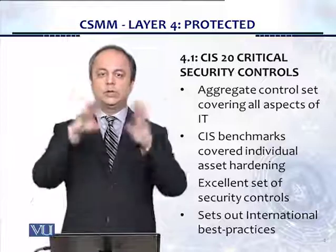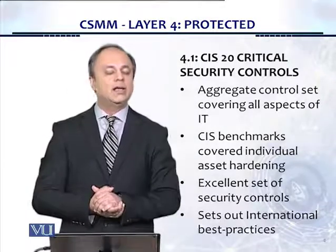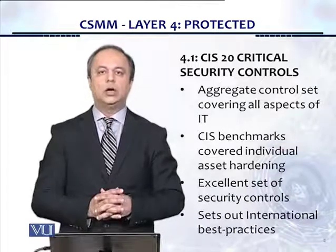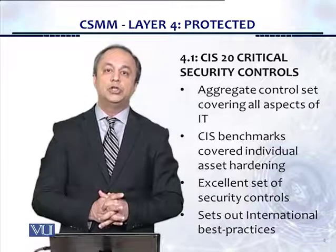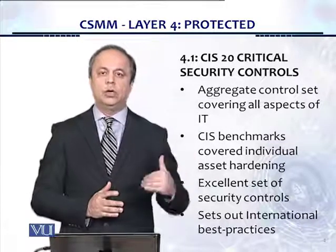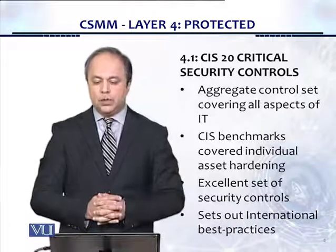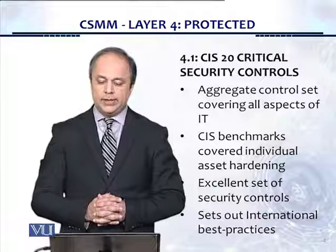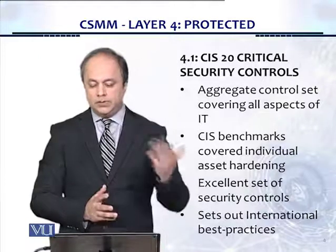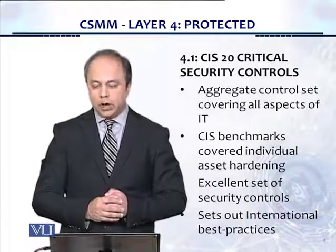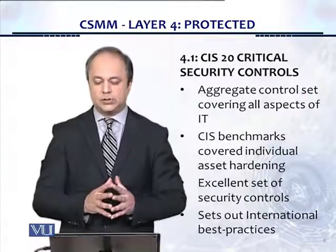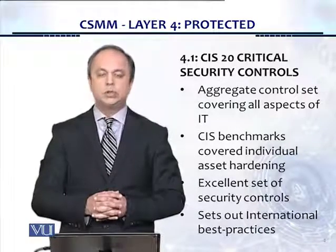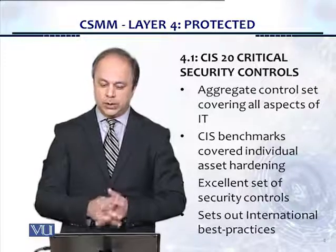These are the type of aggregate controls which CIS 20 Critical Controls asks for. There are 20 different controls and it covers the entire organization. It's an excellent framework — we have used this in our course as part of security engineering in the transformation model at Layer 3. The aggregate control set covers all aspects of IT, whereas the CIS Benchmarks covered previously in security hardening addressed individual assets. This is an excellent set of security controls representing international best practices.